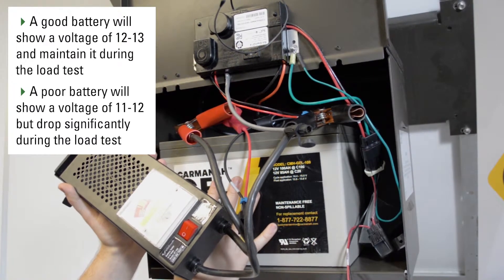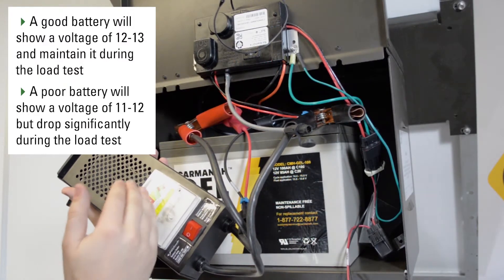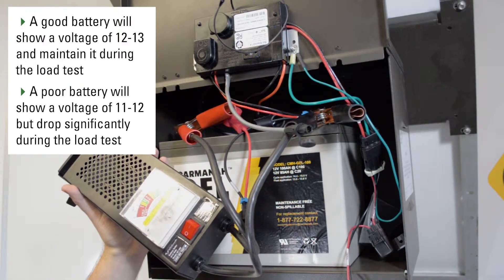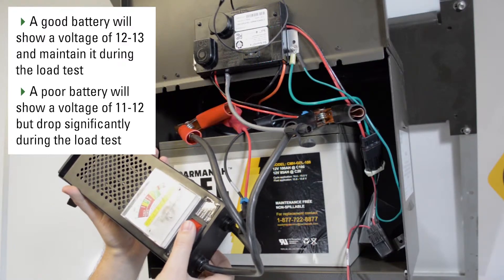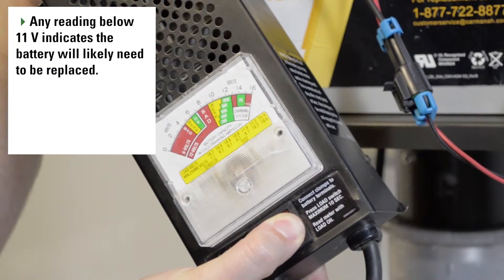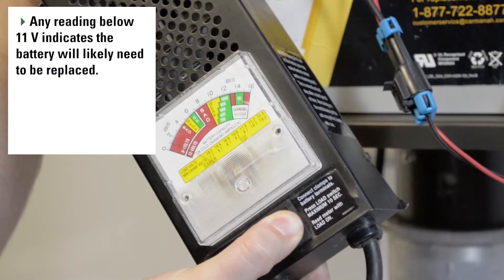If the battery had reached the end of its serviceable life, the initial voltage may be between 11 and 12. But when we push the test button, the voltage would drop significantly and continue to drop. This means that the battery can no longer store any energy.